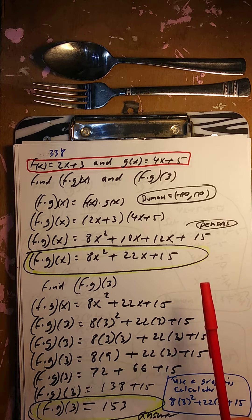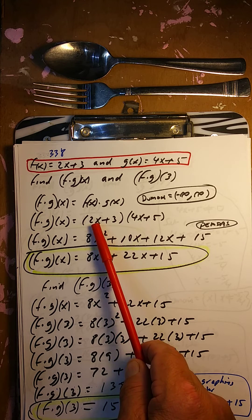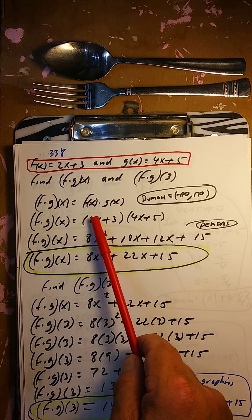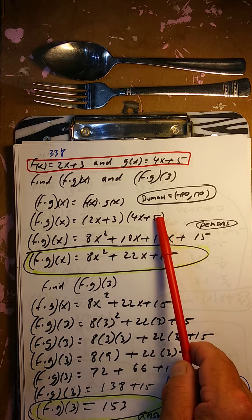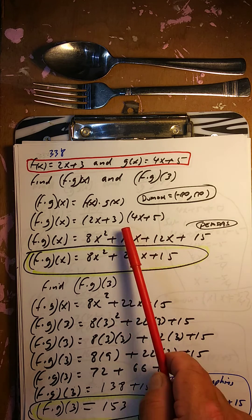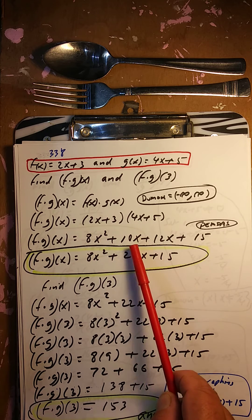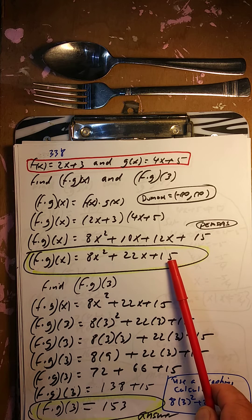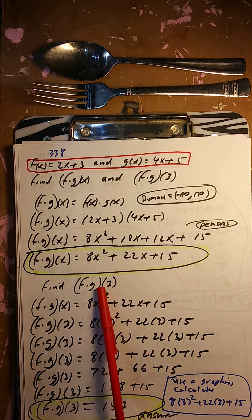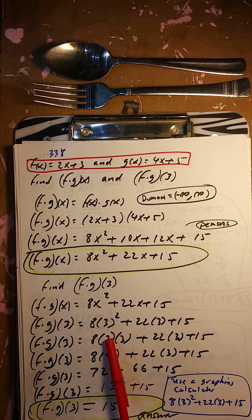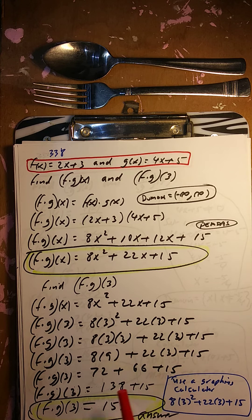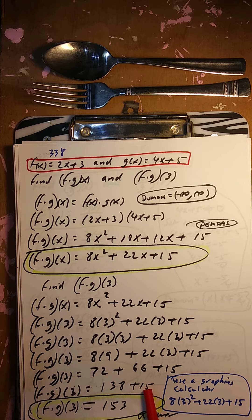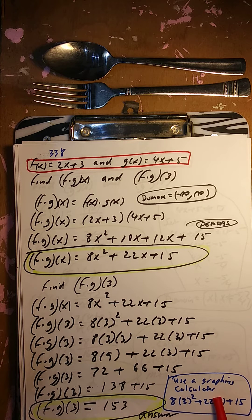f times g of x: we multiply the functions. f times g of x is 2x plus 3 times 4x plus 5. 2x times 4x is 8x squared, 2x times 5 is 10x, 3 times 4x is 12x, 3 times 5 is 15. Combine: 8x squared plus 22x plus 15. So f times g of x equals 8x squared plus 22x plus 15. To find f times g of 3, put 3 in: 8 times 9 is 72, 22 times 3 is 66, plus 15. 72 plus 66 is 138, plus 15 is 153.